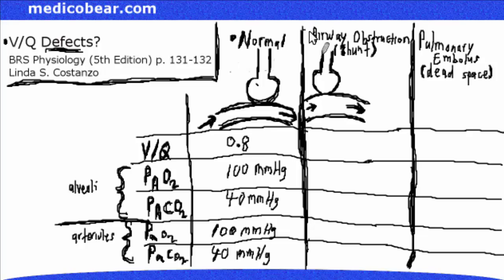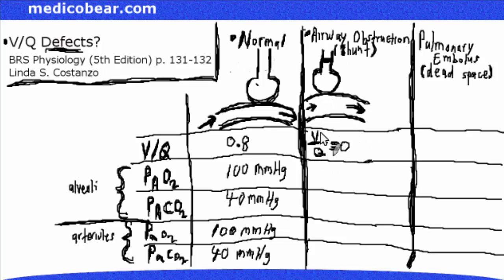With airway obstruction — the shunt — let's say someone at dinner chokes on a steak and it goes down the wrong pipe, blocking the trachea. We can't get air down into the alveoli. If it's totally blocked, the VQ equals zero, because ventilation goes to zero and zero divided by anything is zero. If it's a partial block, VQ will be less than 0.8; if totally blocked, it's zero.